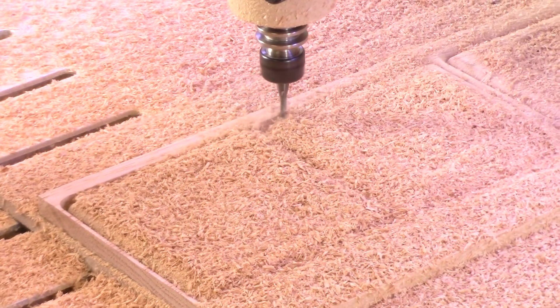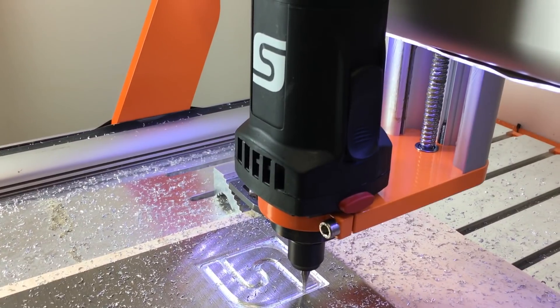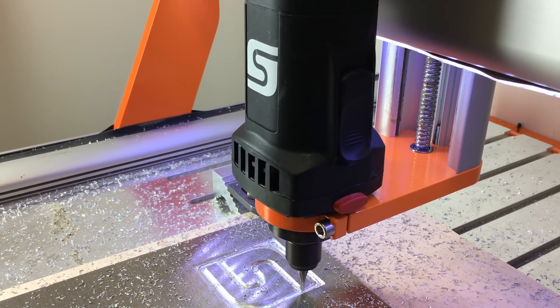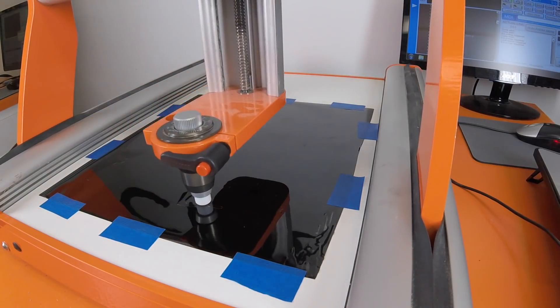When you think of owning a CNC machine, most people think mainly of cutting woods, plastics, and metals, but rarely does anyone think about cutting paper, vinyls, films, and foil. That is up until now.